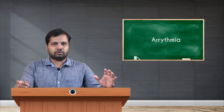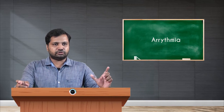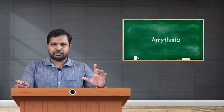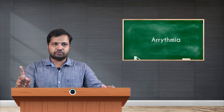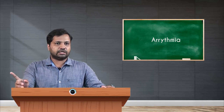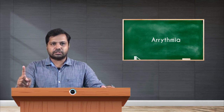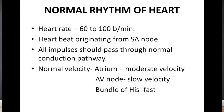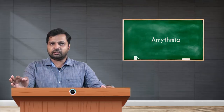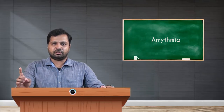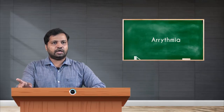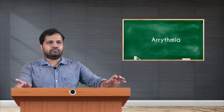In summary, the normal rhythm of the heart requires a heart rate of 60 to 100 beats per minute, with the heartbeat originating from the SA node, passing through the normal conduction pathway. The velocity should be moderate in the atrium, slow in the AV node, and high in the bundle of His.